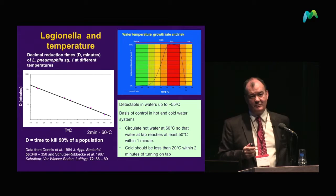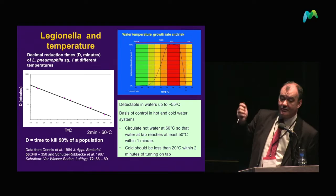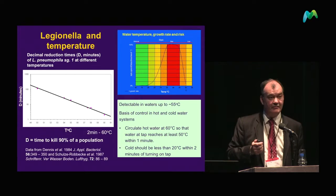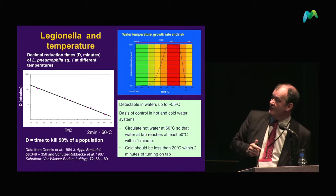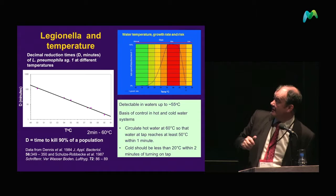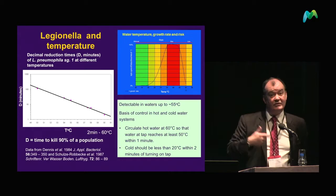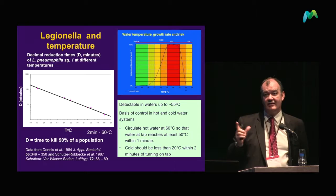Temperature is an important feature. This slide shows the optimum range within which Legionella will grow — 25 to 50 degrees — and on the other side, the time it takes to kill 90% of the Legionella population. Very few Legionella survive beyond two minutes at 60 degrees, which is one of the temperatures we set in terms of Legionella control.